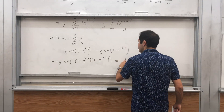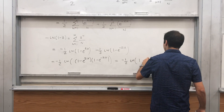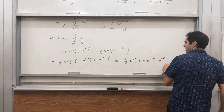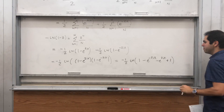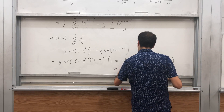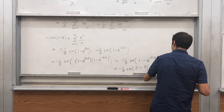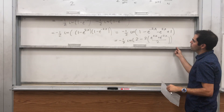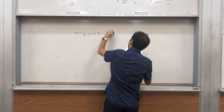We can expand the product and get a nice simplification: -½ ln(1 - e^(-2ix) - e^(2ix) + e^0). Since e^0 = 1, that last term is just 1. It turns out we can write the middle terms in terms of cosine: this becomes -½ ln(2 - 2·(e^(2ix) + e^(-2ix))/2), which is -½ ln(2 - 2cos(2x)).